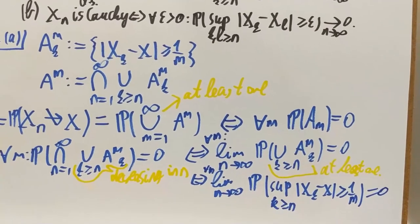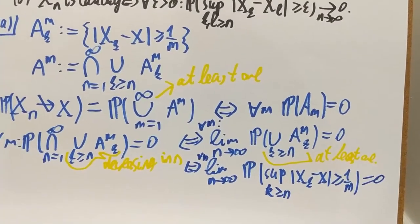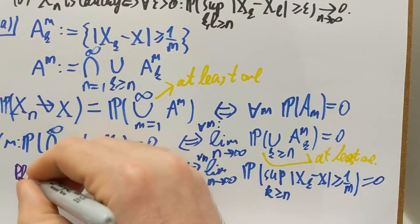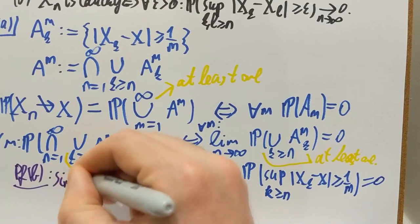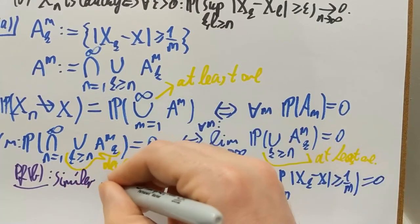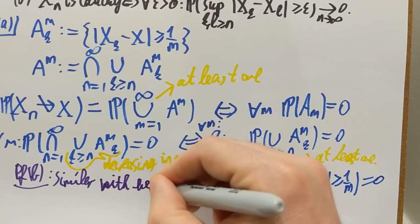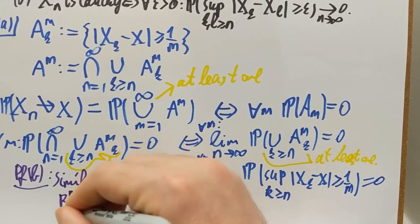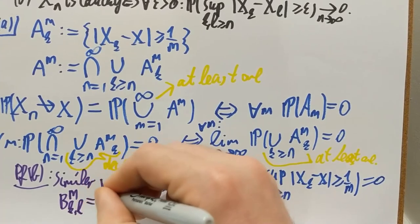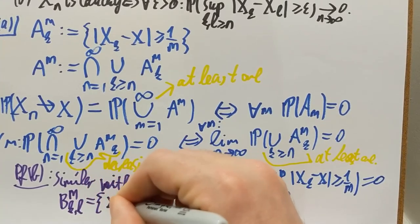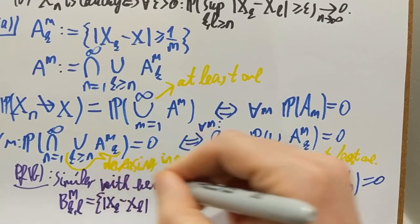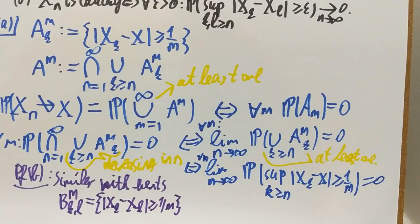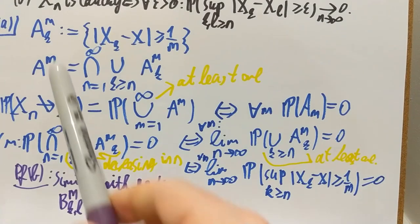I won't say much about Part B, just a short remark. The proof of Part B is similar, using events B(k,l,m) defined as |xk minus xl| is larger than 1/m — so these events have double indices. Use these events instead of the events A(k,m) as above.